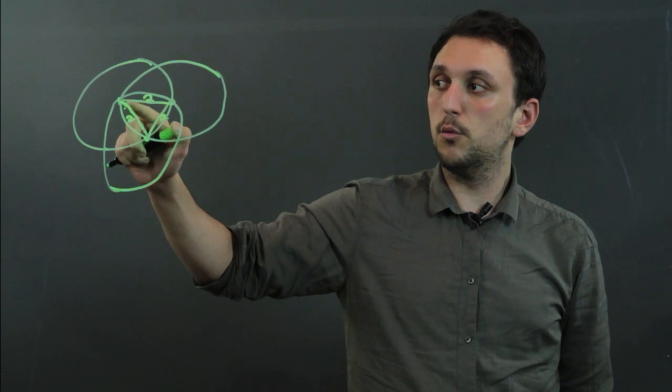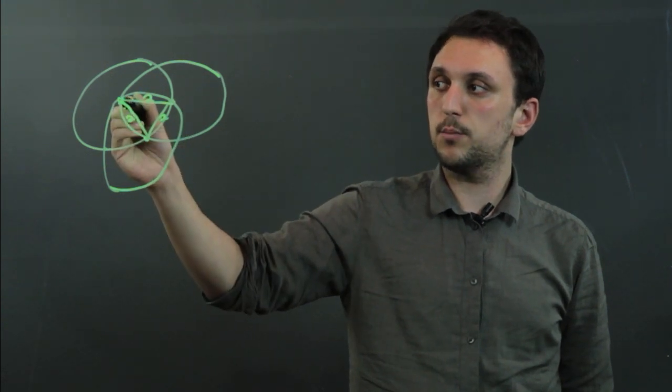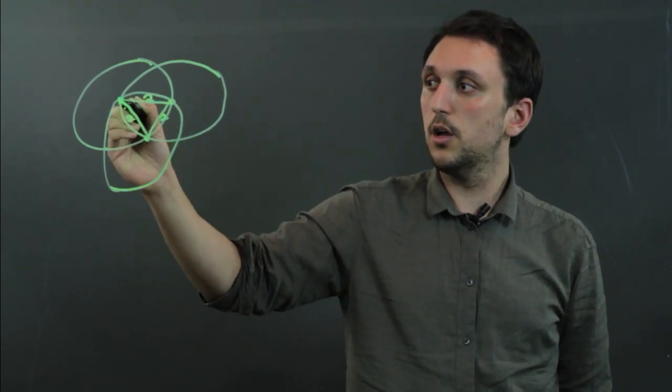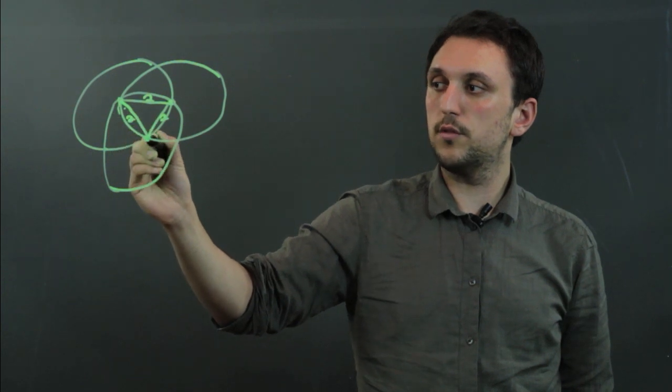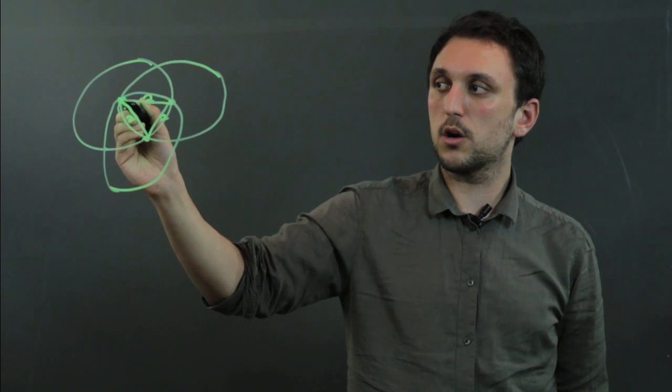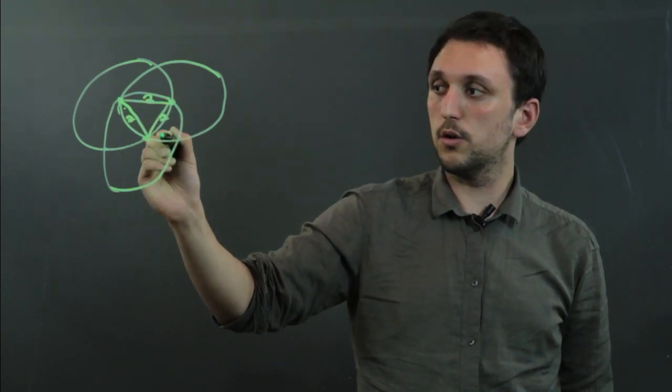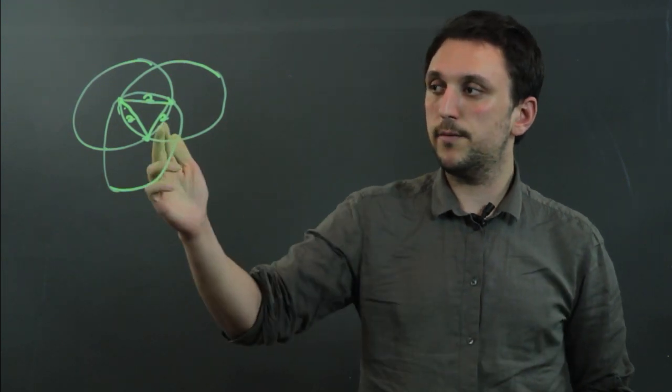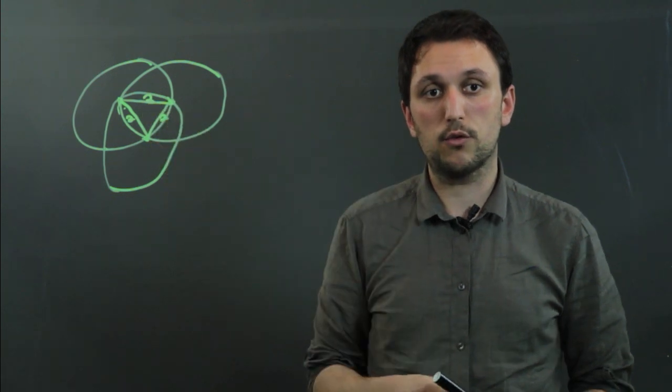However, a Reuleaux triangle will take from this point to this point to this point. Instead of drawing straight lines, we'll actually draw the curved line from here to here, a curved line from here to here, and a curved line from here to here. So a Reuleaux triangle is like a puffy, bloated version of an equilateral triangle.